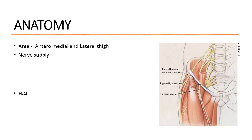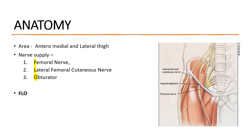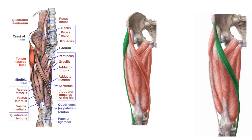Before we proceed, we need to understand a bit of anatomy. When we're doing a fascia iliaca block, our goal is to block three nerves. The way I remember is by a short formula called FLOW: the first is the femoral nerve, the second is the lateral femoral cutaneous nerve, and the third is the obturator nerve, which is quite medial.